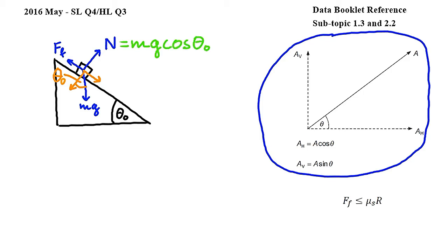Using the same reasoning, the friction force Ff is equal to the component of mg that is parallel to the plane. Again, using the diagram from the data booklet, we can conclude that Ff is equal to mg sin theta 0.